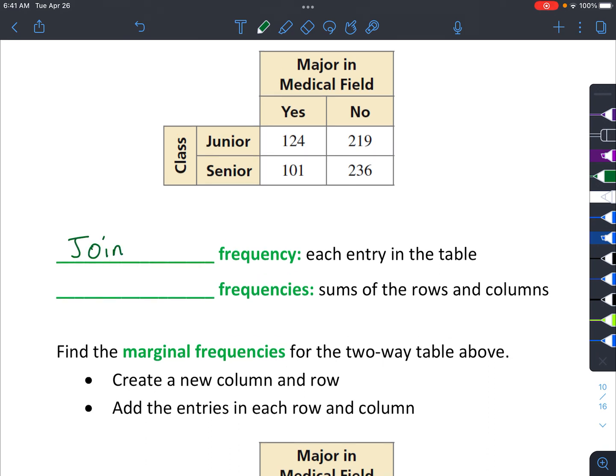So there's a little bit of vocabulary. We have joint frequency, and that's each entry in the table. So each of these numbers is a joint frequency because it's talking about two types of things at the same time. In this case, it's saying this person's a junior and they said yes to majoring in the medical field. And this piece of information actually has two categories also. So someone said no, but they're also a senior at the same time.